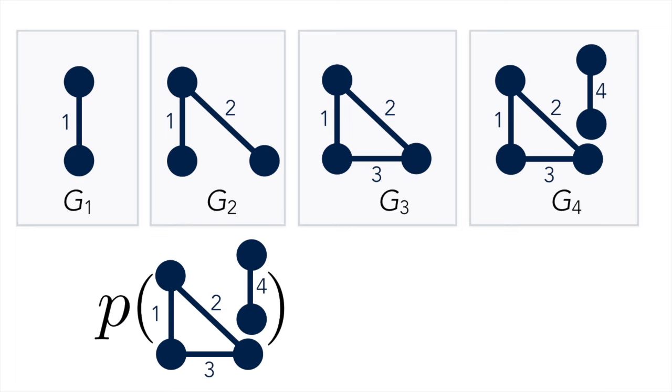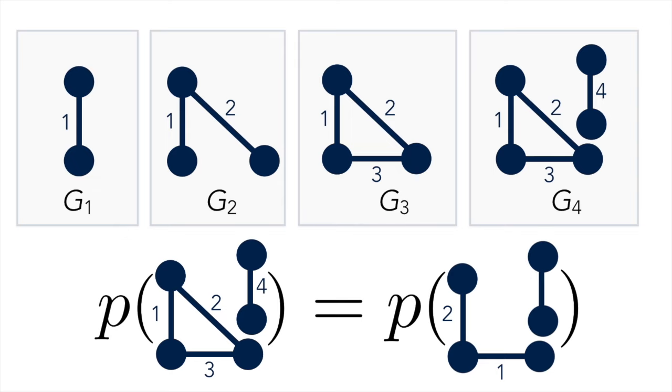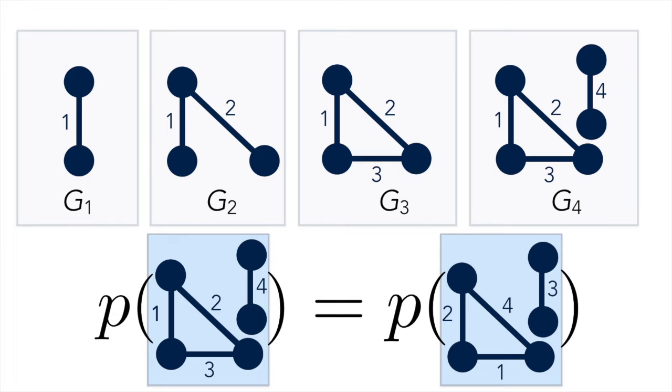The random graph sequence is edge exchangeable if permuting the order of the edges doesn't change the distribution of the graph sequence. These two graphs are the same except the edge labels are permuted, and under edge exchangeability they have the same probability.